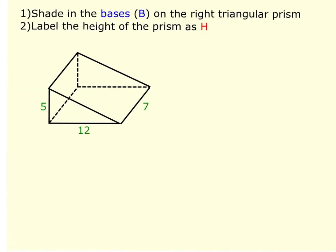Moving through the note sheet, the first example shows how volume comes together for a right triangular prism. Number one says to shade in the bases — the right triangles are the bases of this prism. We label the height of the prism as H, which is the distance between the two bases, so 7 would be the height.